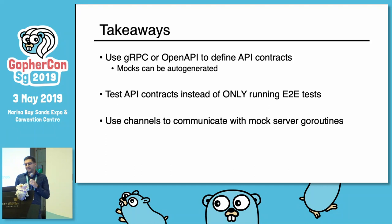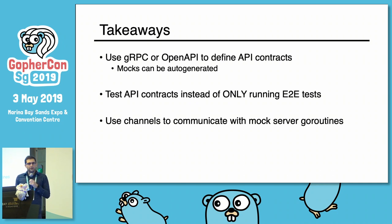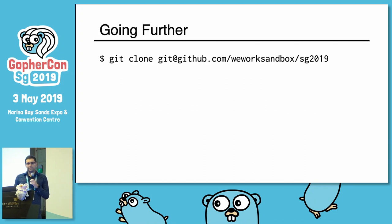So the takeaways: you can use gRPC or OpenAPI to define the contracts, and if you do that you can auto-generate the mock instances. You can test the API contracts instead of only running end-to-end tests, and you can use channels to communicate with mock server Go routines. All the code is on GitHub — you can clone it, check it out, and ask questions or make a PR.